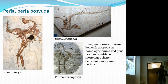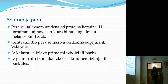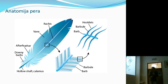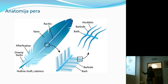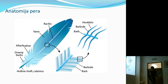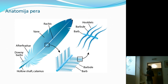Da vas upoznam s terminom što je jedno pero. Anatomija pera: ima centralnu šupljinu ili kalamus, iz njega izlaze primarni izbojci ili barbi, i sekundarni izbojci ili barbule. Sekundarni izbojci u peru djeluju poput čička - spoje se jedan na drugi i dobijemo ovu veliku, lijepu, ravnu površinu koja je pero.